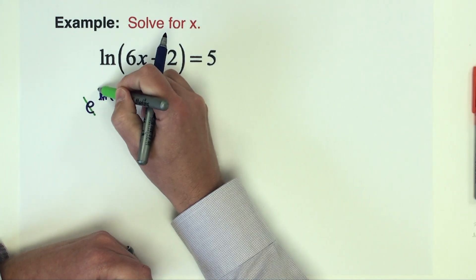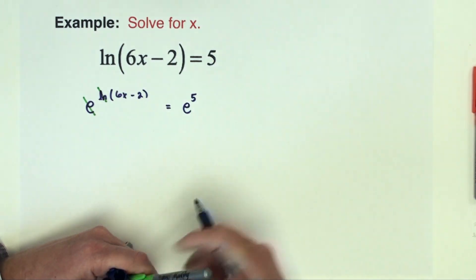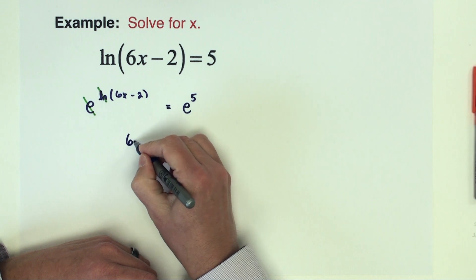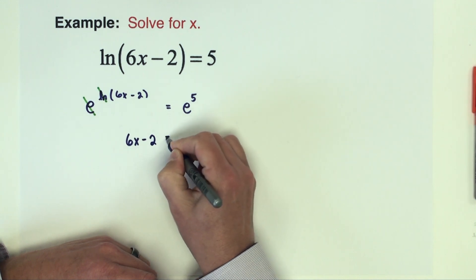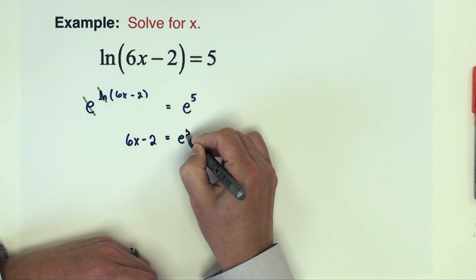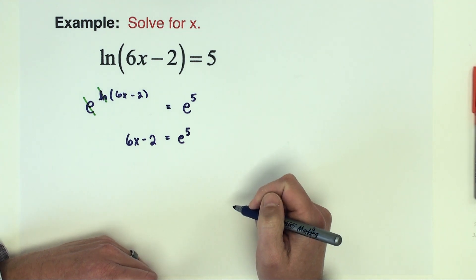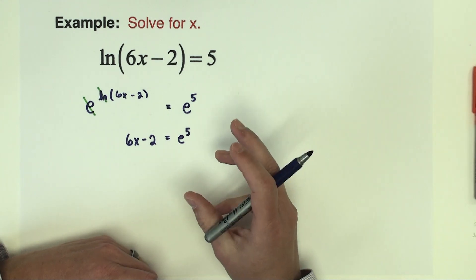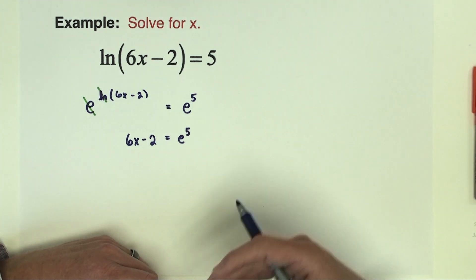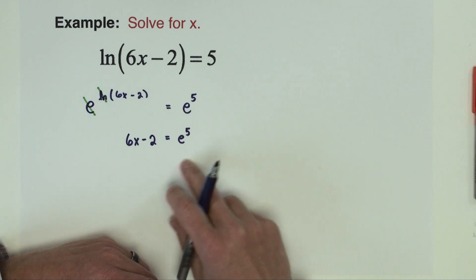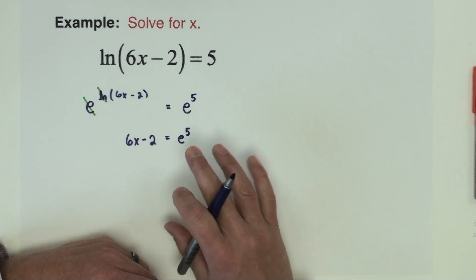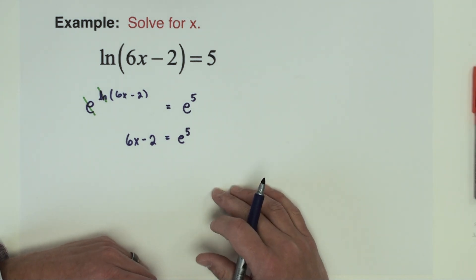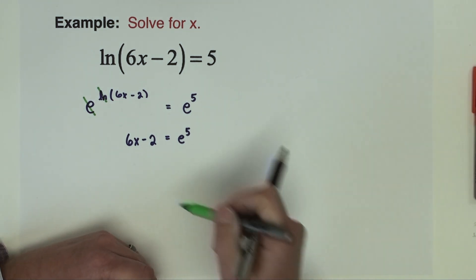The e and the natural log being inverses are going to cancel each other out. So we have now 6x minus 2 equals e to the fifth power. Because we're dealing with e here we're not going to be able to necessarily combine terms and get x equals just a single number. We're going to get an exact form of this answer and then we'll go to the calculator and get an approximate answer as well. But let's just carry out our steps.